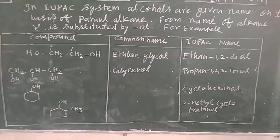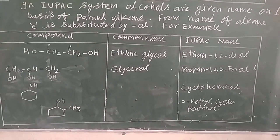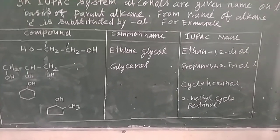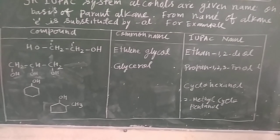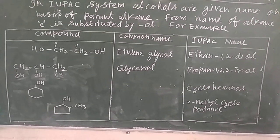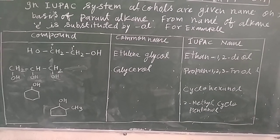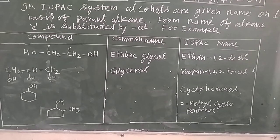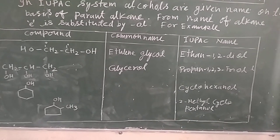Some cyclo compounds which have an OH group are named as cycloalkanols. For example, cyclohexane is termed as cyclohexanol.